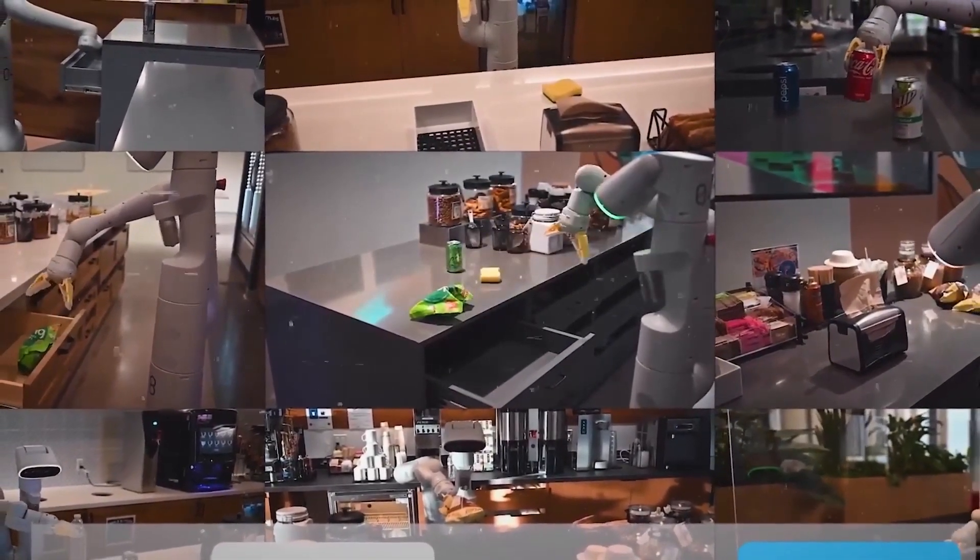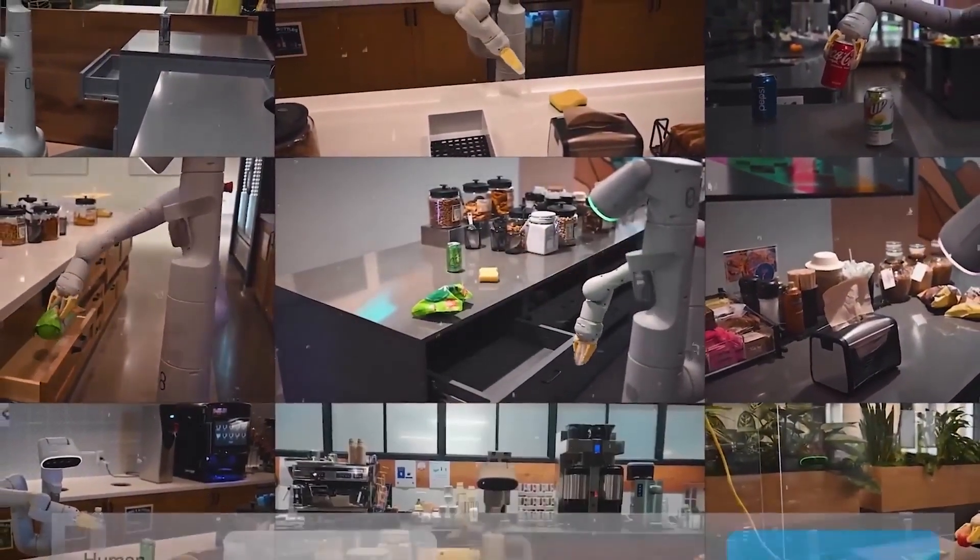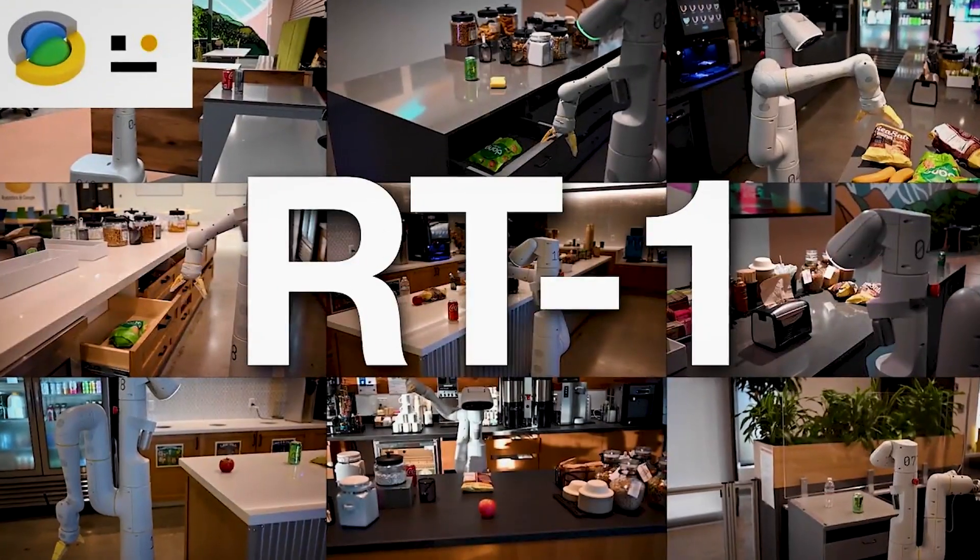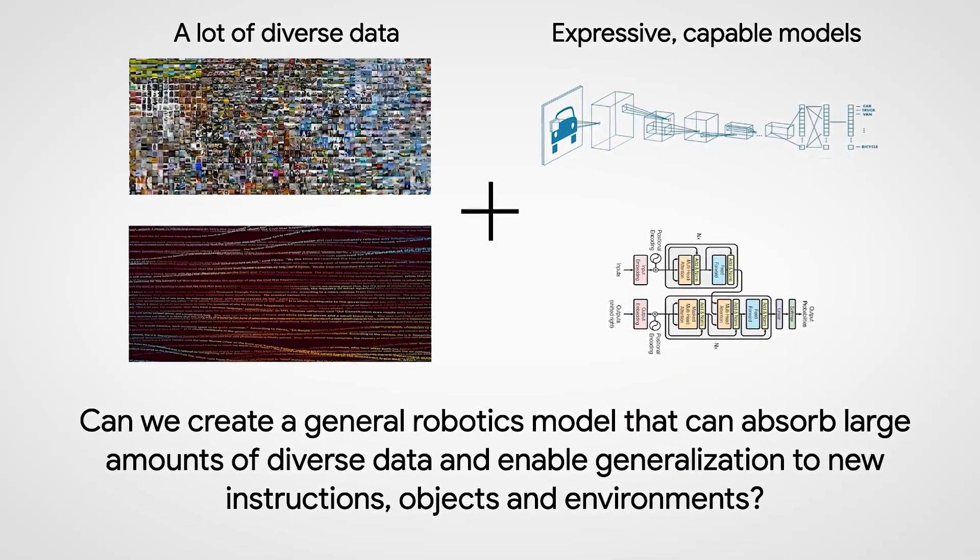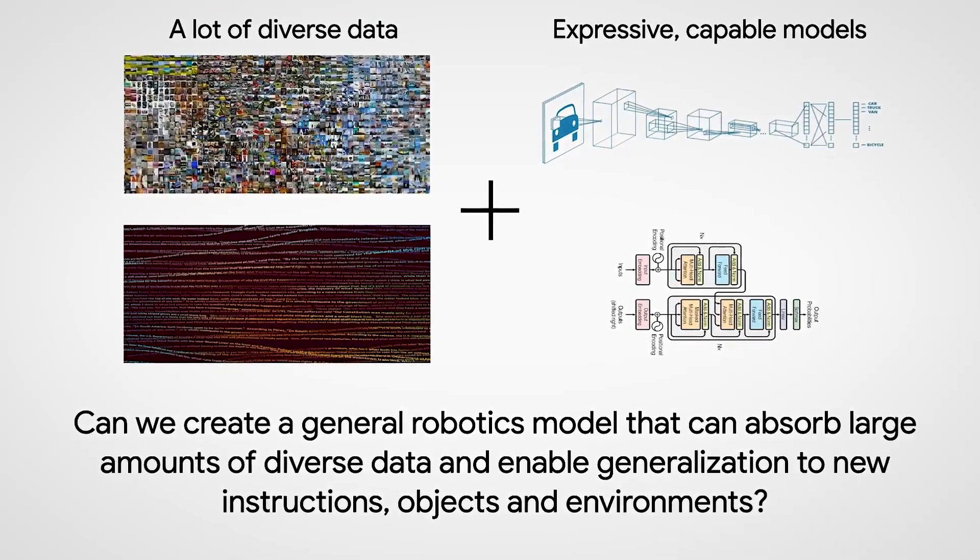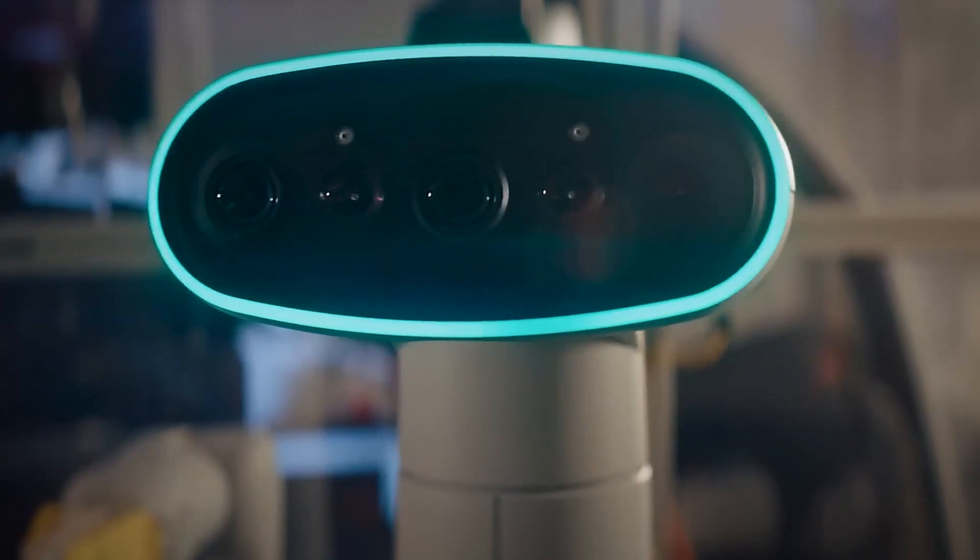The best part is that Google uses the same cool way of representing robot actions as they did in RT1. By converting it to a string, they made it easy for VLM models to understand robot data. There's no need to change the rules. It's like the robot and RT2 speak the same language.